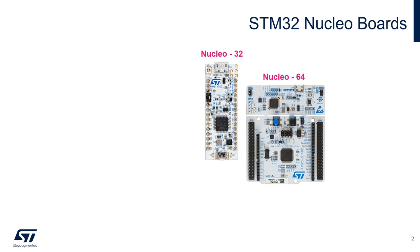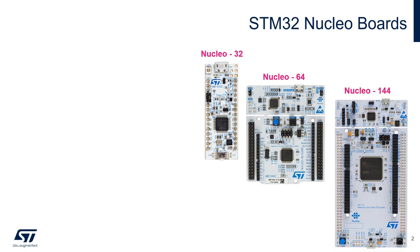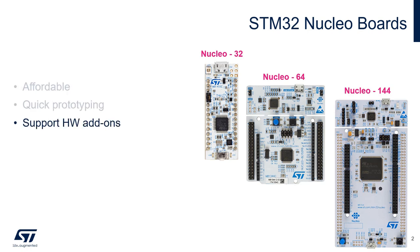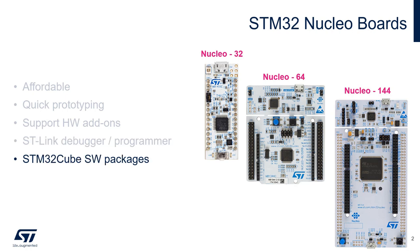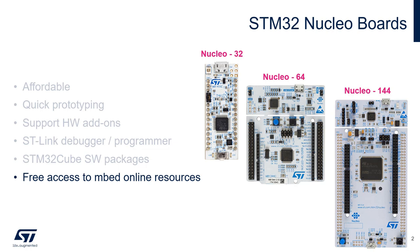We currently offer three Nucleo variations: 32-pin, 64-pin, and 144-pin. The STM32 Nucleo boards make for an easy starting point when wanting to try out a new idea. Nucleos are highly affordable, easy and quick to prototype with, can be extended with numerous specialized application hardware add-ons, omit the need for a separate probe due to the onboard STLink, come with the STM32 Cube software packages, and all STM32 Nucleo users have free access to the mbed online resources.